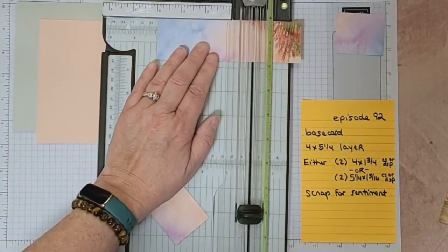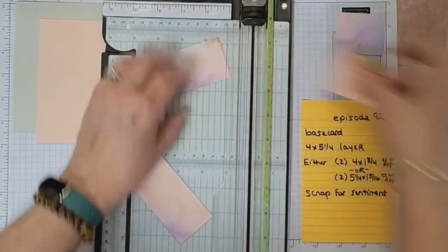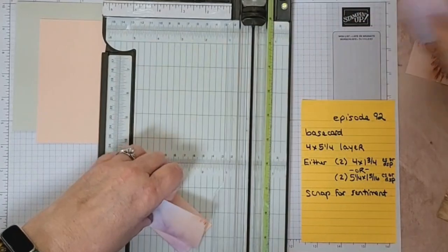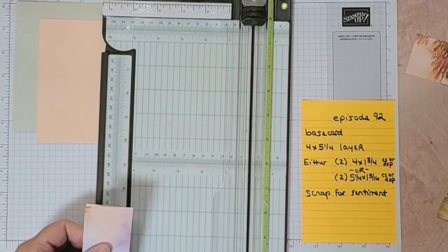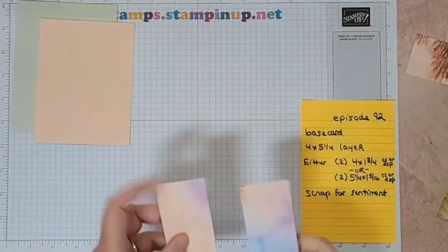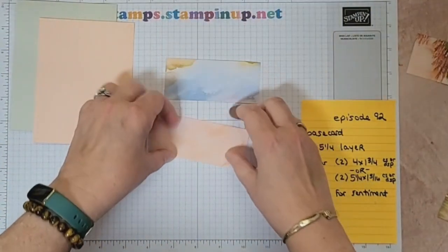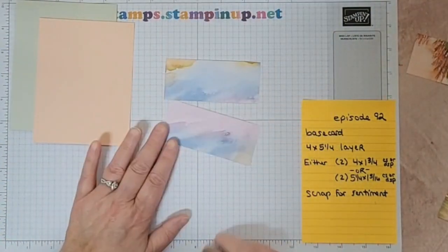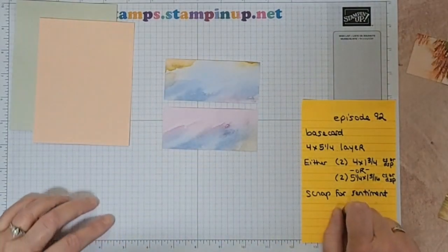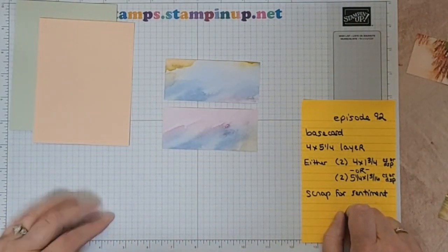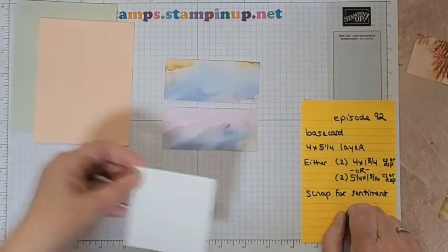Now if you have a twelve by twelve piece you'll be able to get either or both of those out, but since I'm using a six by six piece we'll go ahead and do like that. Remember you have two sides. All right, and then you're going to use a scrap for a sentiment, so any old scrap will do.